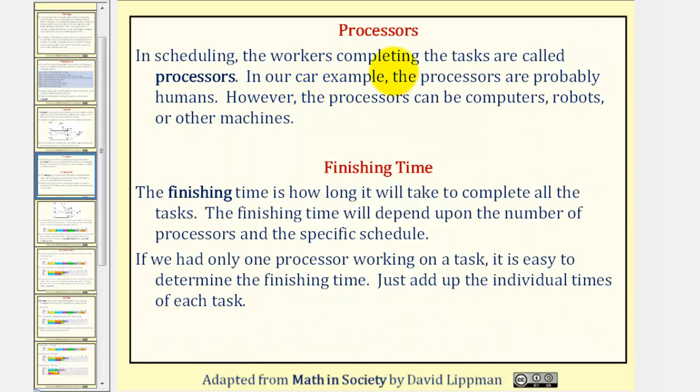In scheduling, the workers completing the tasks are called processors. In our car example, the processors are probably humans. However, the processors can be computers, robots, or other types of machines. The finishing time is how long it takes to complete all tasks. The finishing time will depend upon the number of processors and the specific schedule created.